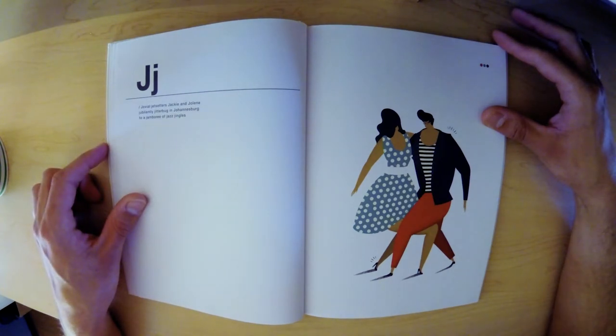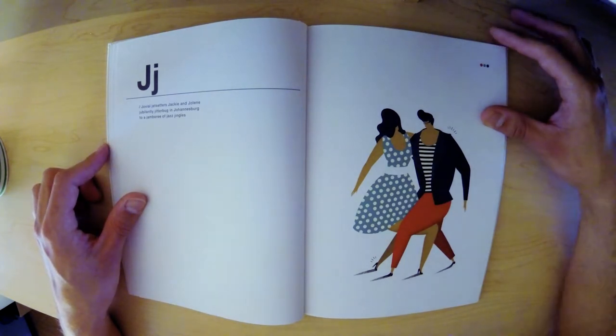J. Jovial jet-setters Jackie and Jolene jubilantly jitterbug in Johannesburg to a jamboree of jazz jingles.